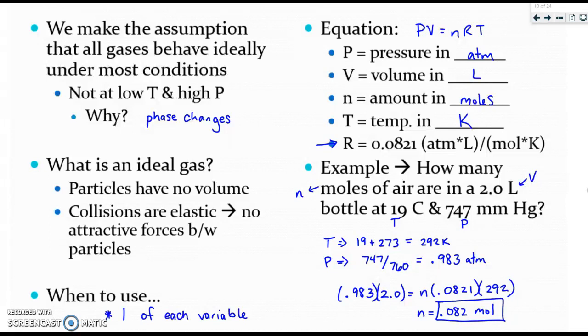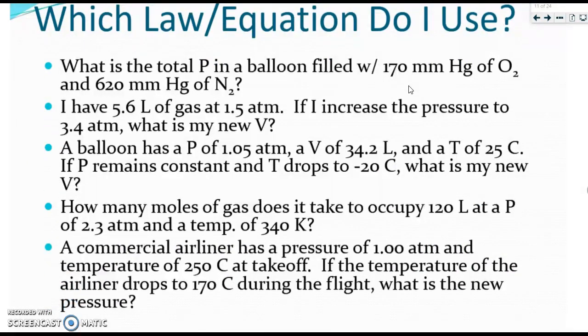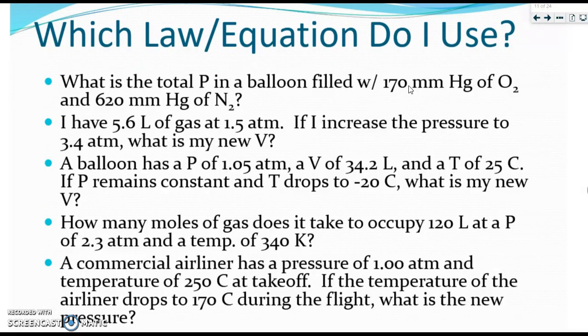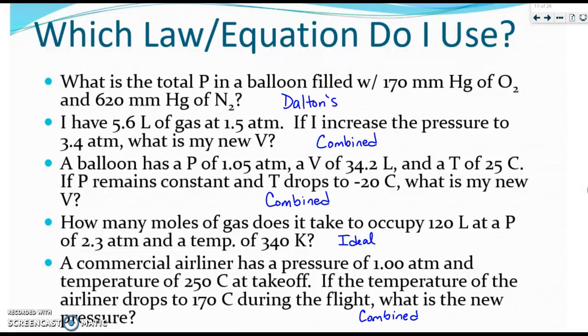One of the hardest parts about using all these different equations is first identifying which equation to use. Let's kind of review that on the next slide. So for each of these problems I would like you to identify which equation we're using. Is it the combined which is all of the variables P1 V1 over T1 N1 equals P2 V2 over T2 N2. Is it Dalton's? Or is it ideal? Please pause the video and identify the equations.